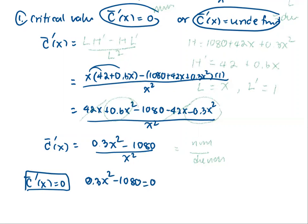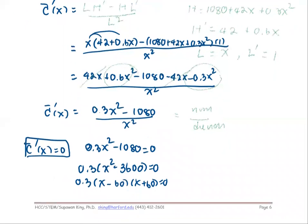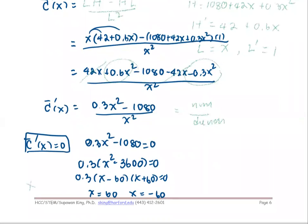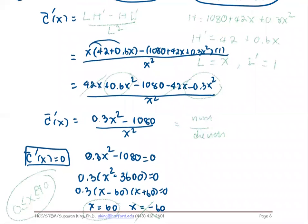We can factor out 0.3, giving X² − 3,600 = 0. Factoring completely: (X − 60)(X + 60) = 0. This gives two values: X = 60 and X = −60. Since X must be between 0 and 90, we ignore X = −60 because production quantity cannot be negative. So our first critical value is X = 60.